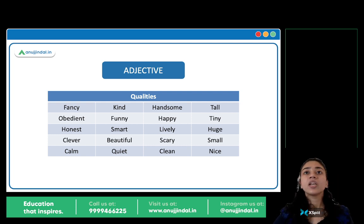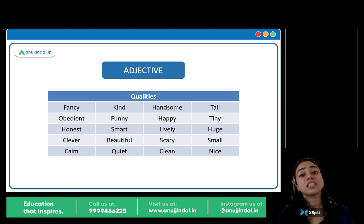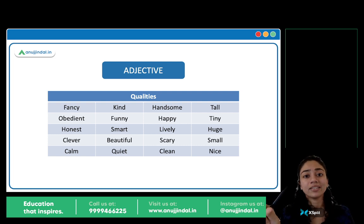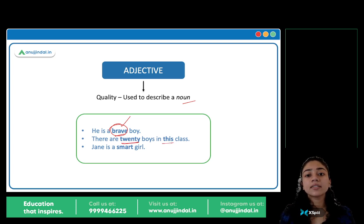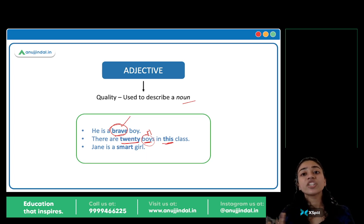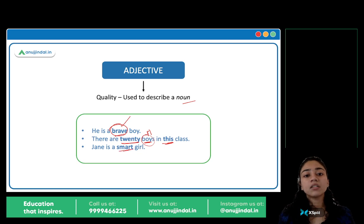These are used to describe a noun. For example: 'He is an honest man.' Man is a noun — lekin what kind of a man is he? He is an honest man. Honest hai quality hai, which is used to describe our noun, man. Toh honest is an adjective. 'He is a brave boy.' Brave hai, quality hai, adjective hai. 'There are twenty boys in this class.' Twenty describes boys — toh twenty is an adjective. Even 'this class' — this describes class, toh this bhi adjective hai. 'Jane is a smart girl.' What kind of a girl is she? Smart — quality hai, adjective hai.